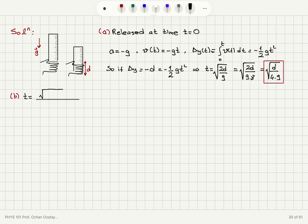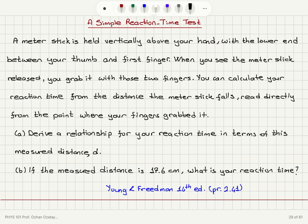It's going to be square root 2 times 17.6 centimeters, which is 17.6 times 10 to minus 2 meters, divided by square root of 9.8 meters per second squared.